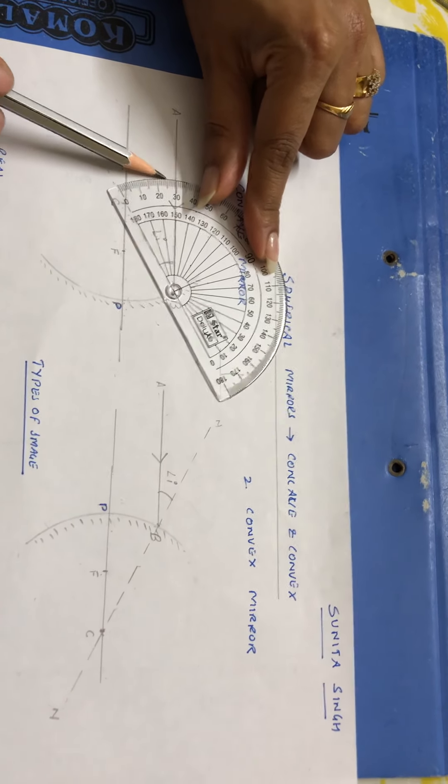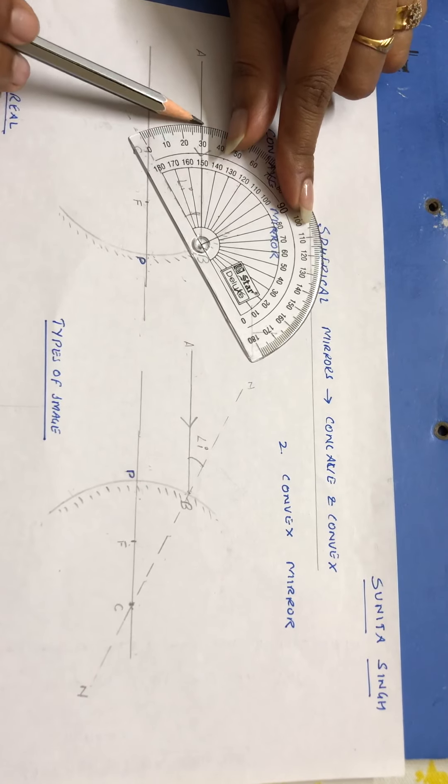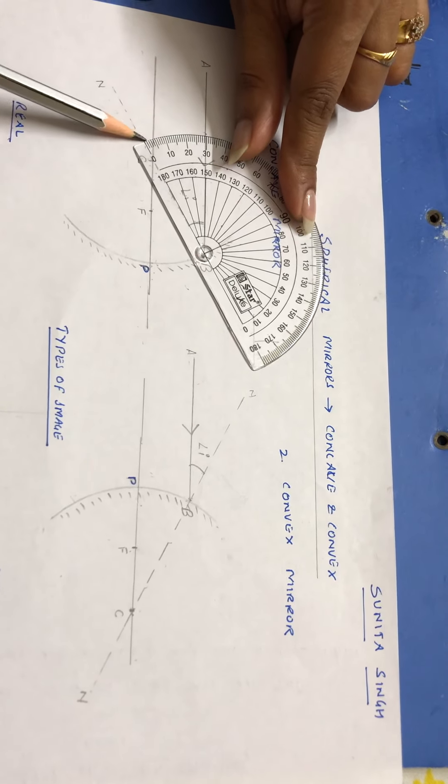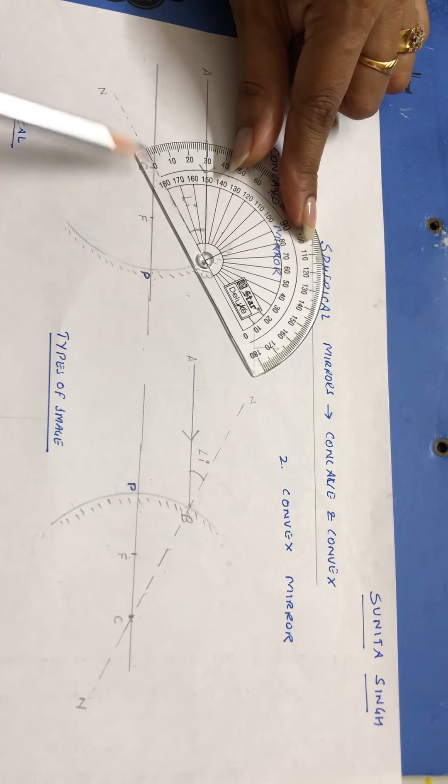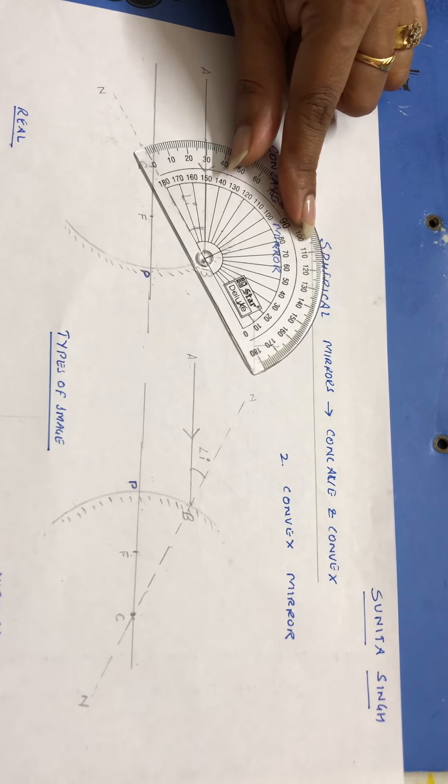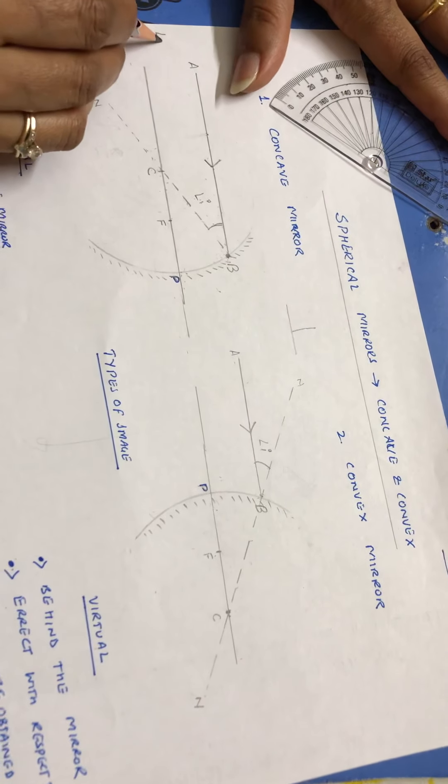Now from here you can easily measure this angle. You can see 0, 10, 20, 30. So the value of angle i is 30. How did we place the protractor? Look carefully. So I have measured. So my angle i here is 30.